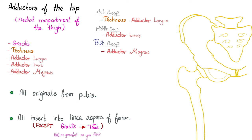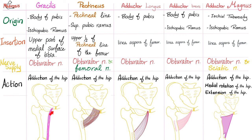Gracilis has disobeyed the rule — it's not as graceful as you think. It starts at the pubes and ends at the upper part of the tibia. Pectineus originates from the pectineal line of the hip bone and inserts into the upper half of the pectineal line of the femur. Adductor longus goes from the body of the pubis to the linea aspera. Adductor brevis also goes from the body of the pubis to the linea aspera. Adductor magnus is magnificent — it starts at the ischial tuberosity and the ischiopubic ramus and has two insertions: the linea aspera of the femur and the adductor tubercle of the femur.